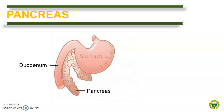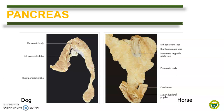Next, we move to the pancreas. The pancreas is an irregularly lobulated organ that lies adjacent to the proximal duodenum and frequently abuts the stomach, the caudal vena cava, and the caudal part of the liver. It has a left and right lobe and a body which connects the two lobes. In dogs, the pancreas has right and left branches which meet at an acute angle, shaped like the letter V. In horses, it is massive and triangular in shape, with a compact body and short right and long left lobes, as shown here.